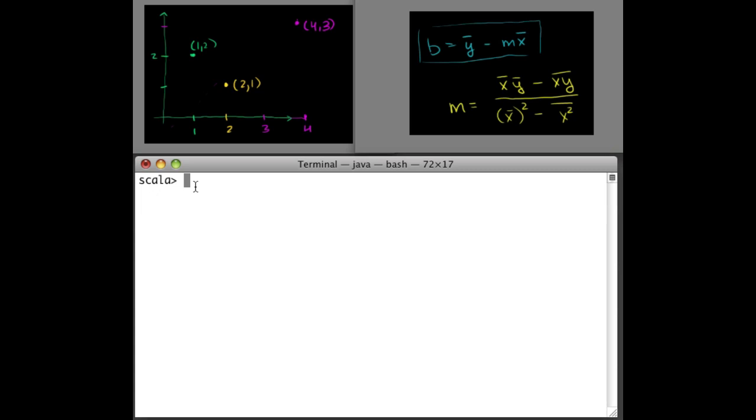So one thing we can do is make a list of the coordinate pairs. I'm going to create a variable that's a list of tuples of two doubles, and it's initialized to these values: (1,2), (2,1), and (4,3). So now I've created a variable called coordinates, or cs, and it has these values.